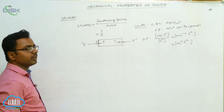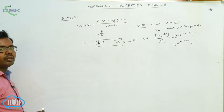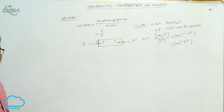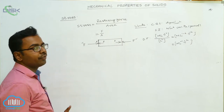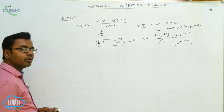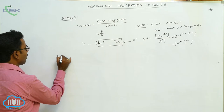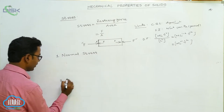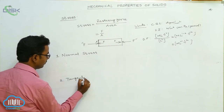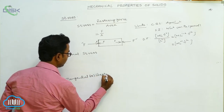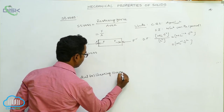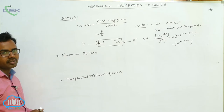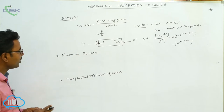So, stress is the restoring force developed per unit area, or the applied force per unit area. Stress is a scalar quantity. Basically, stress is of two types: first is normal stress, and second is tangential or shearing stress.